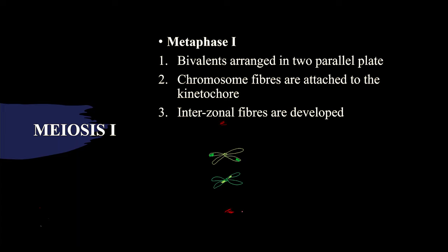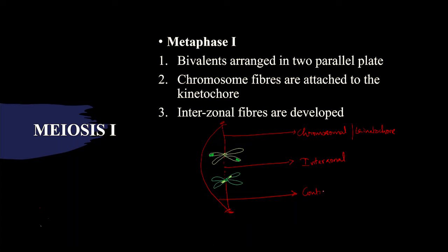Let's consider this is the centriole. There will be spindle fiber formation. The spindle fiber attached to the chromosome is called the chromosomal or kinetochore fiber. There will also be interzonal fibers between the two chromosomes, continuous fibers from pole to pole, and discontinuous fibers as well.